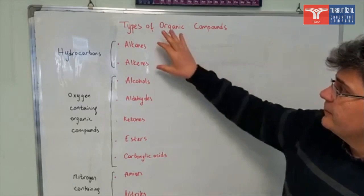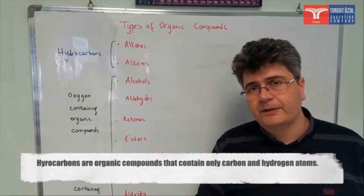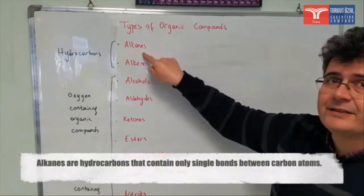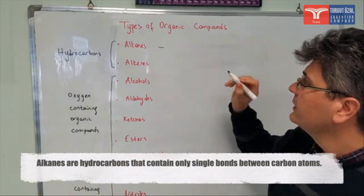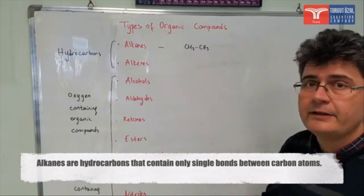The first two compounds we will be talking about are hydrocarbons. Hydrocarbons are compounds that contain only carbon and hydrogen. The first family is alkanes. Alkanes are hydrocarbons which contain only single bonds. So for example CH3-CH3. Ethane is an example of alkanes.